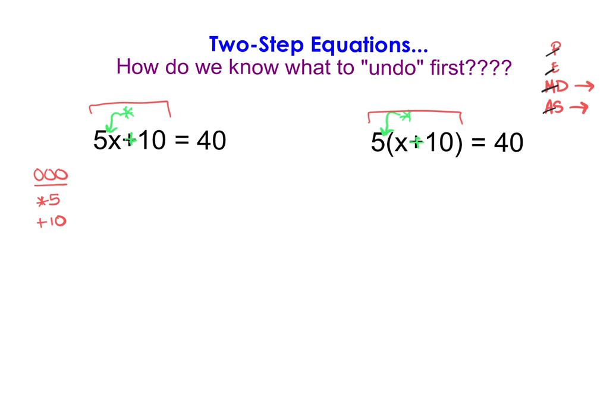Going through the same process on the right-hand problem, it looks a little different. Starting with parentheses, I notice that I do have parentheses — there is a plus 10 happening inside of parentheses. So 'plus 10' comes first in my order of operations list this time because of the parentheses. I don't have an exponent. Then I see multiplication — a multiplication of 10. For addition and subtraction, that's already been taken care of with the parentheses. The order of operations for these two problems is opposite of each other because of how one contains parentheses and one doesn't.